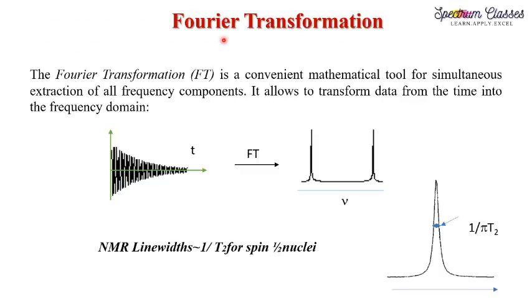Now we will discuss Fourier transformation, which is a very important topic and frequently asked in interviews. Fourier transformation is a convenient mathematical tool for simultaneous extraction of all frequency components — it allows transformation of data from the time domain into the frequency domain. The FID observed via T2 spin-spin relaxation is in the time domain, and when subjected to Fourier transformation, it is converted to the frequency domain where nuclei resonating at different chemical shift values are shown in the spectrum.